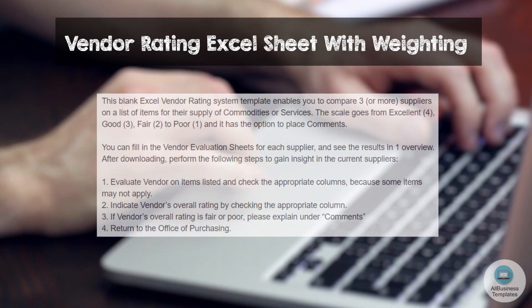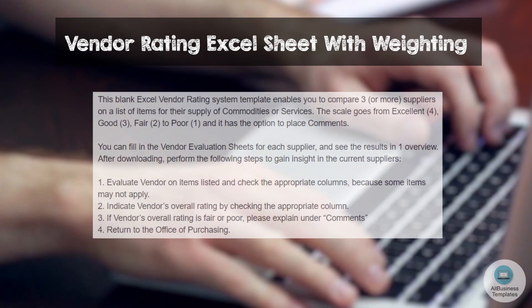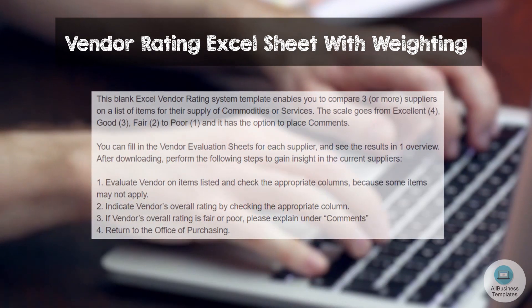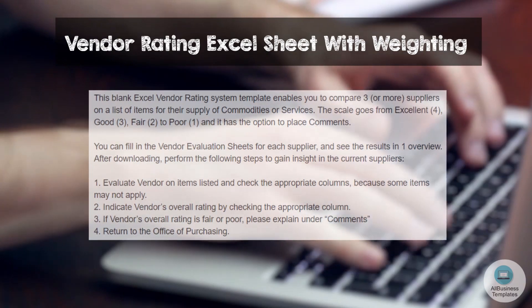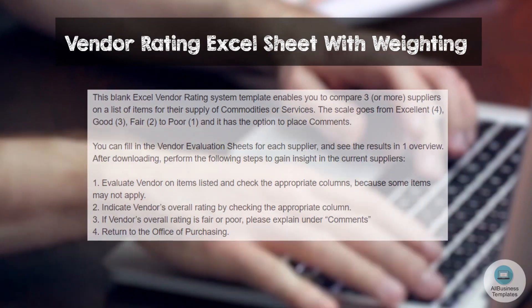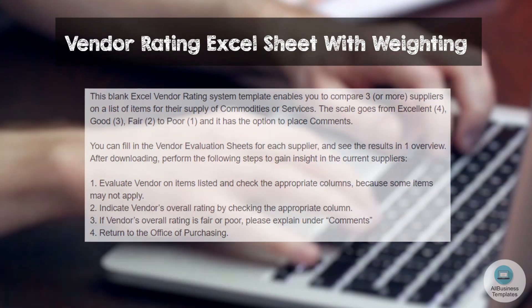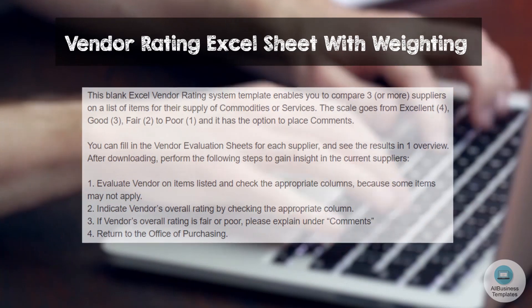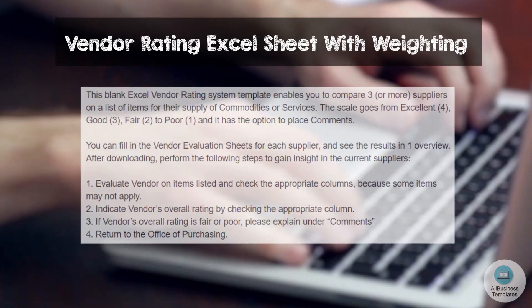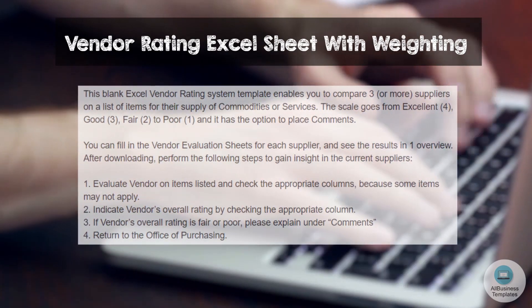The scale goes from Excellent (4), Good (3), Fair (2), to Poor (1), and it has the option to place comments. You can fill in the Vendor Evaluation Sheets for each supplier and see the results in one overview.